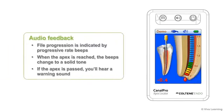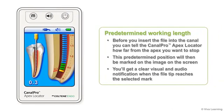In addition to these visual cues, the CanalPro Apex Locator also provides audio feedback of the file progression in the form of progressive rate beeps. When the apex is reached, the beeps change to a solid tone. If the apex is passed, you'll hear a warning sound. In addition, before you insert the file into the canal, you can tell the CanalPro Apex Locator how far from the apex you want to stop. This predetermined position will then be marked on the image on the screen, and you'll get a clear visual and audio notification when the file tip reaches the selected mark.